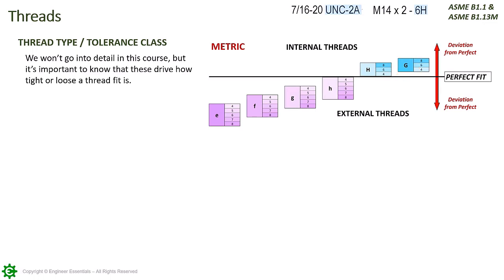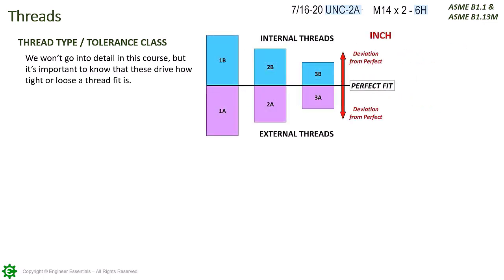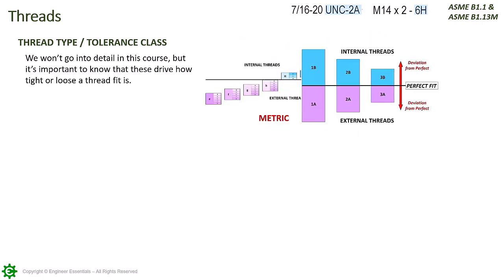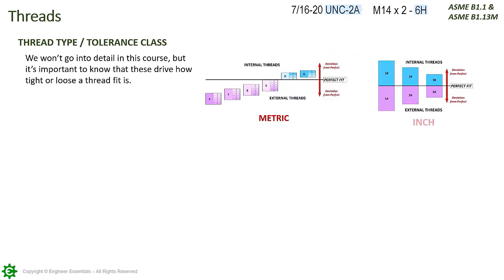Now let's look at a simplified chart showing inch tolerance classes. Using our inch example, we see that 2A means we have an external thread in the middle of the pack. Again, we are not going into detail on purpose here — this is just a high-level overview to give you an understanding of how thread types and tolerance classes can drive the thread fit.